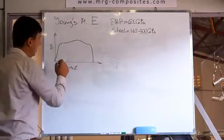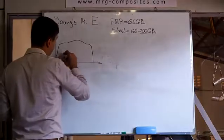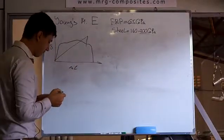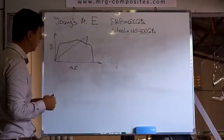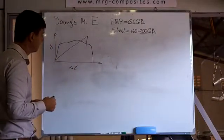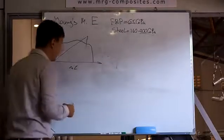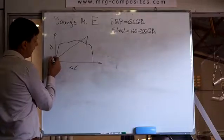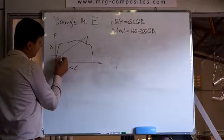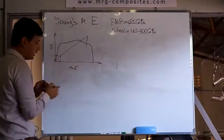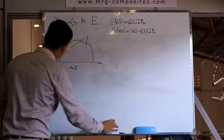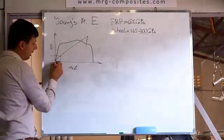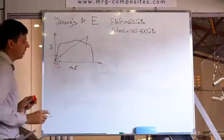FRP is going to work like this — BAM — like this. The idea is that for the same load, the elongation will be different. We've seen this in the previous picture.